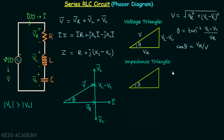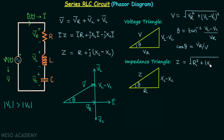Moving on to the impedance triangle: the angle is θ, the hypotenuse is impedance Z, the perpendicular is XL minus XC, and the base is resistance R. From here, impedance Z equals the square root of R² plus (XL minus XC)².